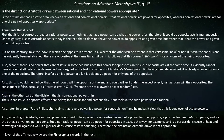Third objection: it would then follow that the will could will the opposite of the end and could will evil under the aspect of evil, just as it can will their opposites. The consequent is false because, as Aristotle says in 7.4, free men are not allowed to act at random. Against non-rational powers: the sun can issue an opposite effect — for it melts ice and hardens clay. Nonetheless, the sun's power is non-rational. This objection comes down to the difference between the actual power and its consequent effects.